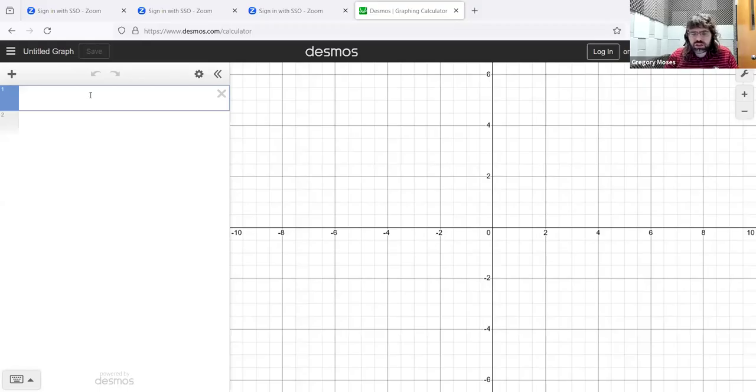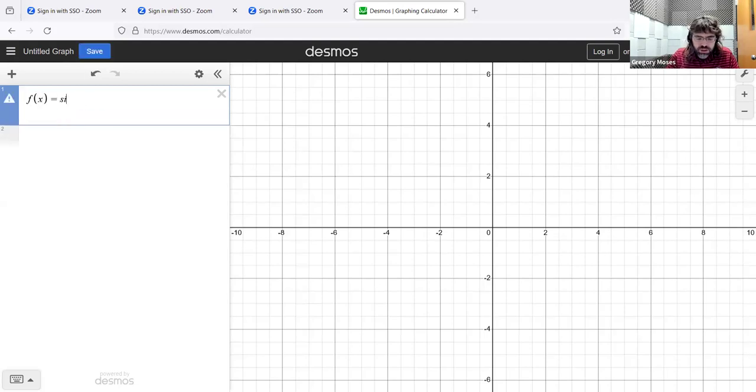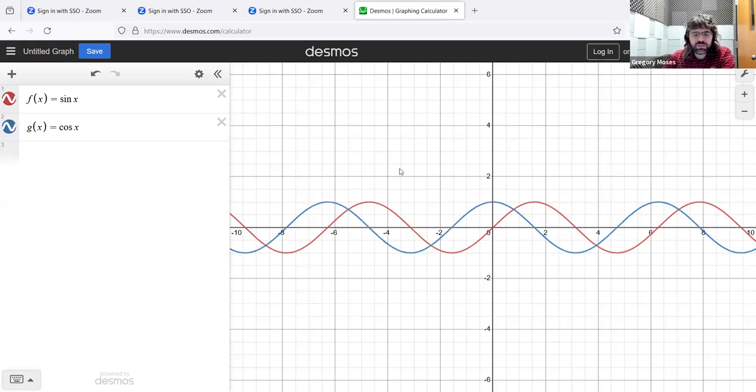The graphs of the sine and the cosine are going to look very similar. I'm going to plot these using Desmos, and Desmos is going to be measuring x in radians. Very similar looking graphs, they both look like waves, essentially.